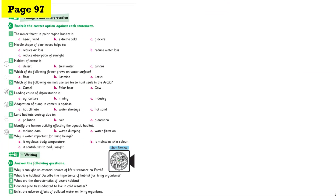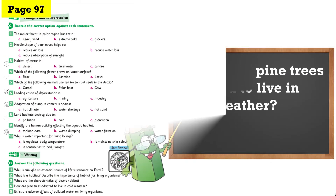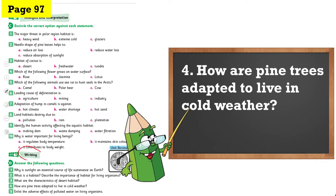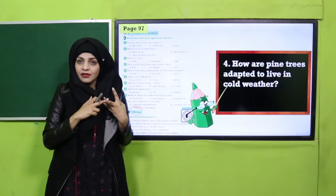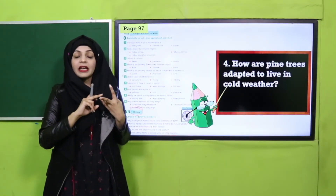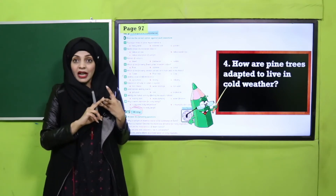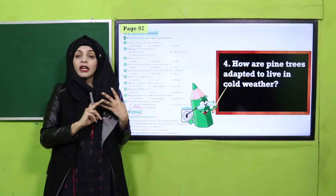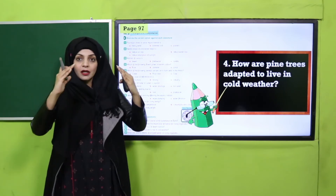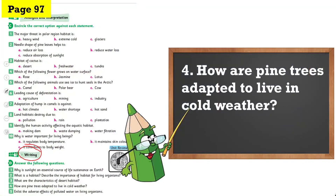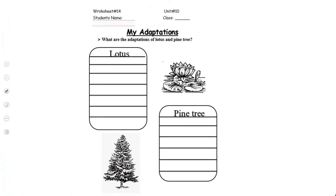Now it's time for practice. Please move to page 97 — writing practice question number four: how are pine trees adapted to live in cold weather? Adaptation one: they are evergreen, with green leaves, so they can absorb maximum heat and light from the sun. Adaptation two: they are cone shaped, so they can easily shed off snow from them.